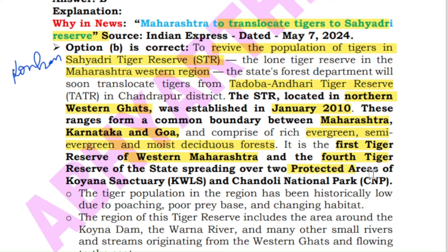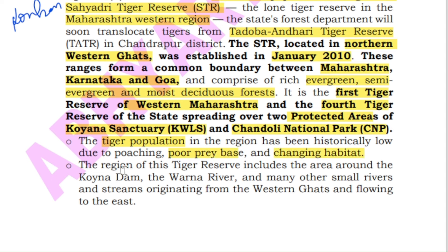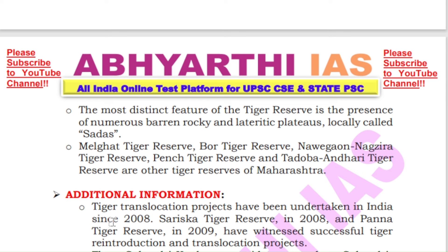The Sahyadri Tiger Reserve basically covers two protective areas — Koyna Wildlife Sanctuary and Chandoli National Park. From the beginning, tiger population was reduced due to poaching, poor prey base and changing habitat due to human encroachment. The reserve is famous because it is around Koyna Dam, Warna River, and many other small rivers and streams which originate from the Western Ghats.